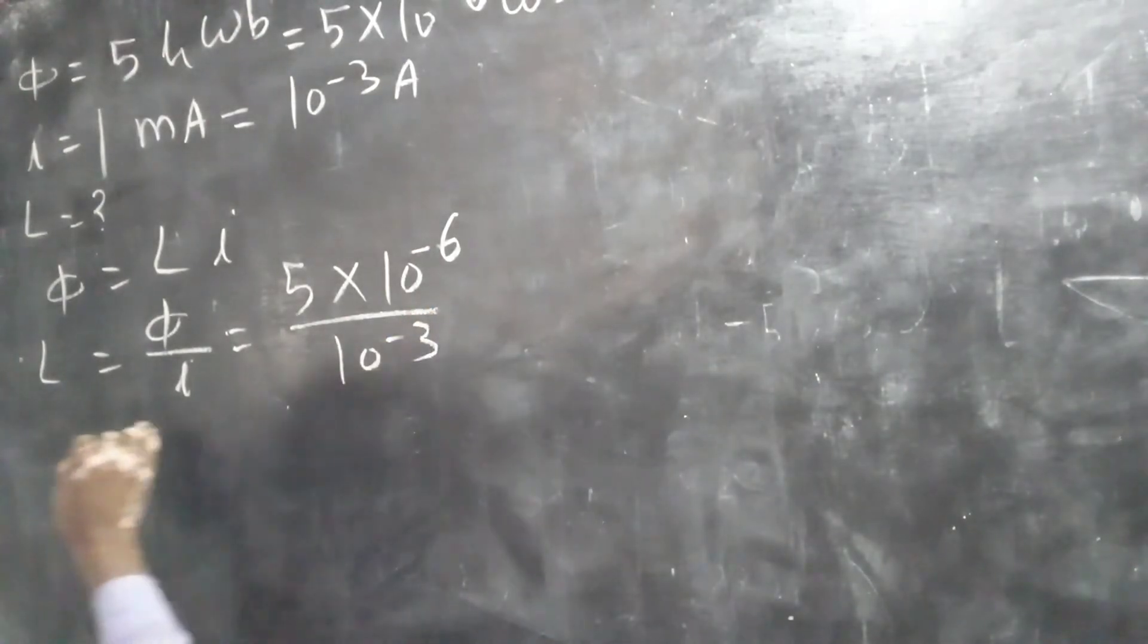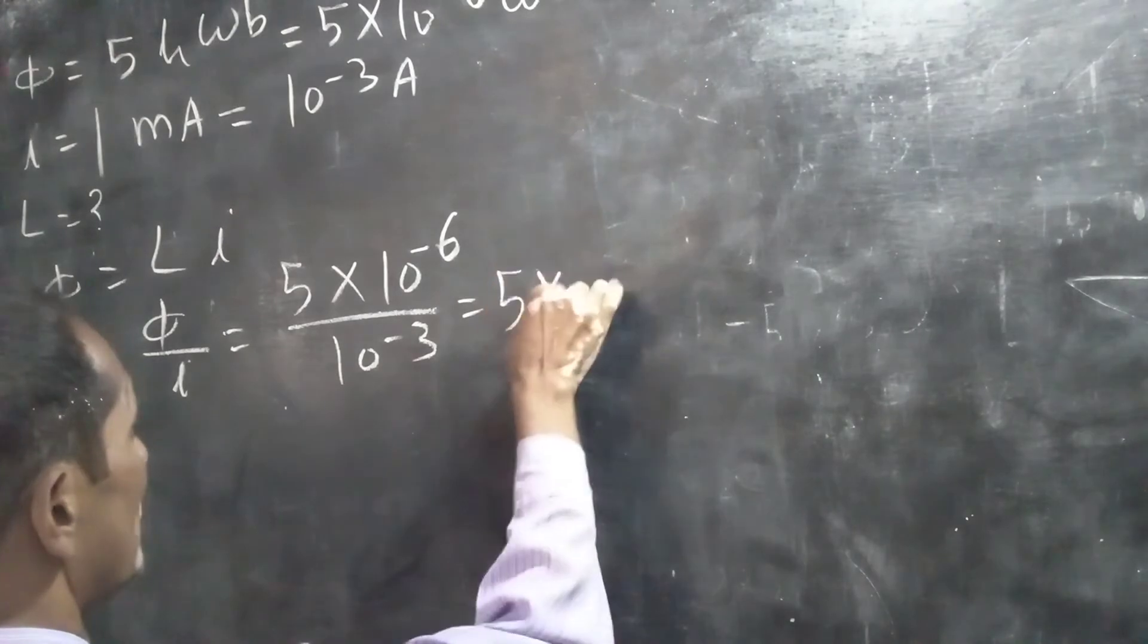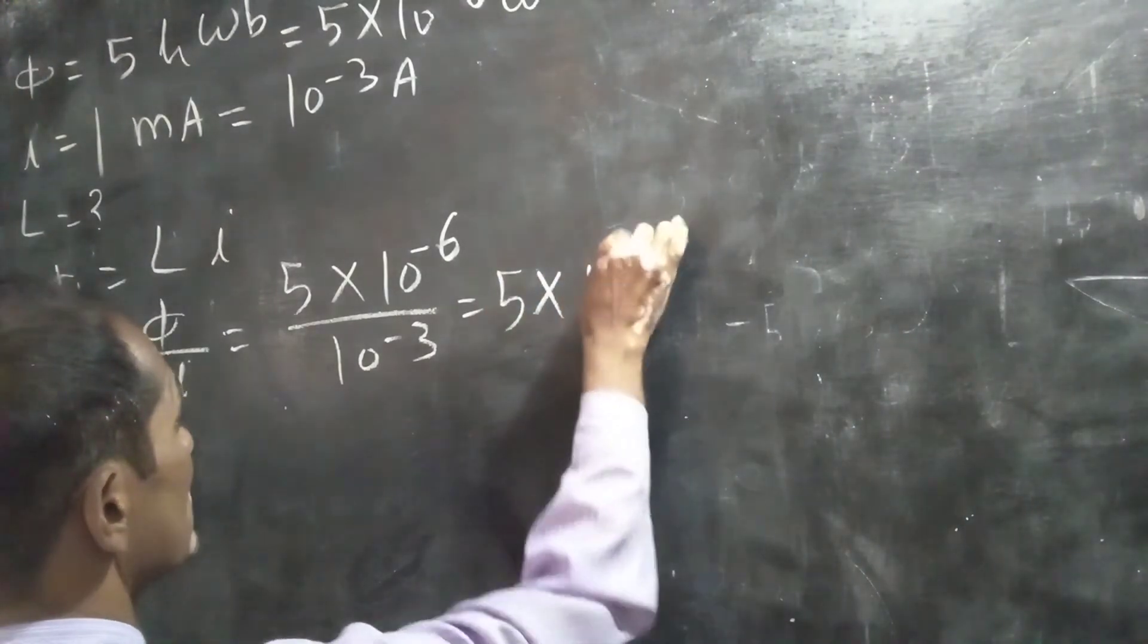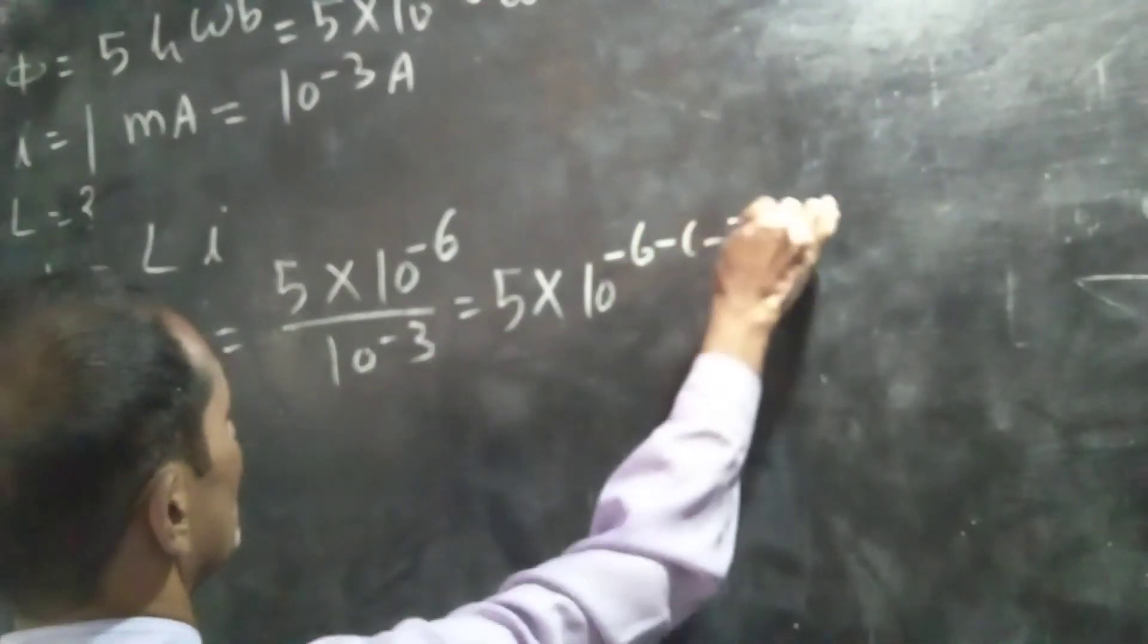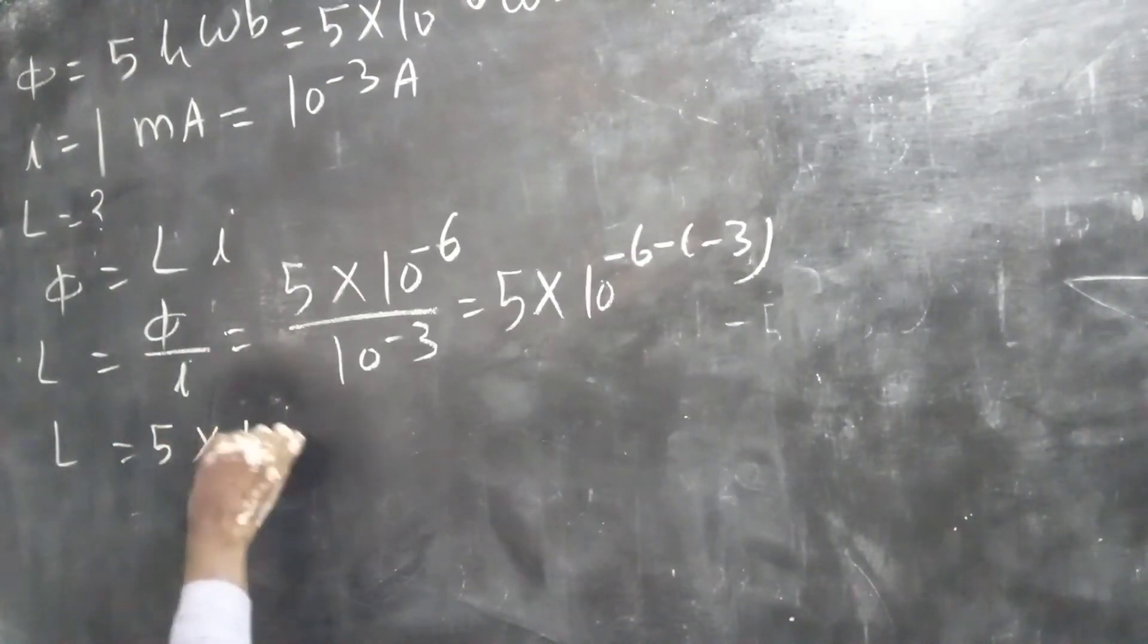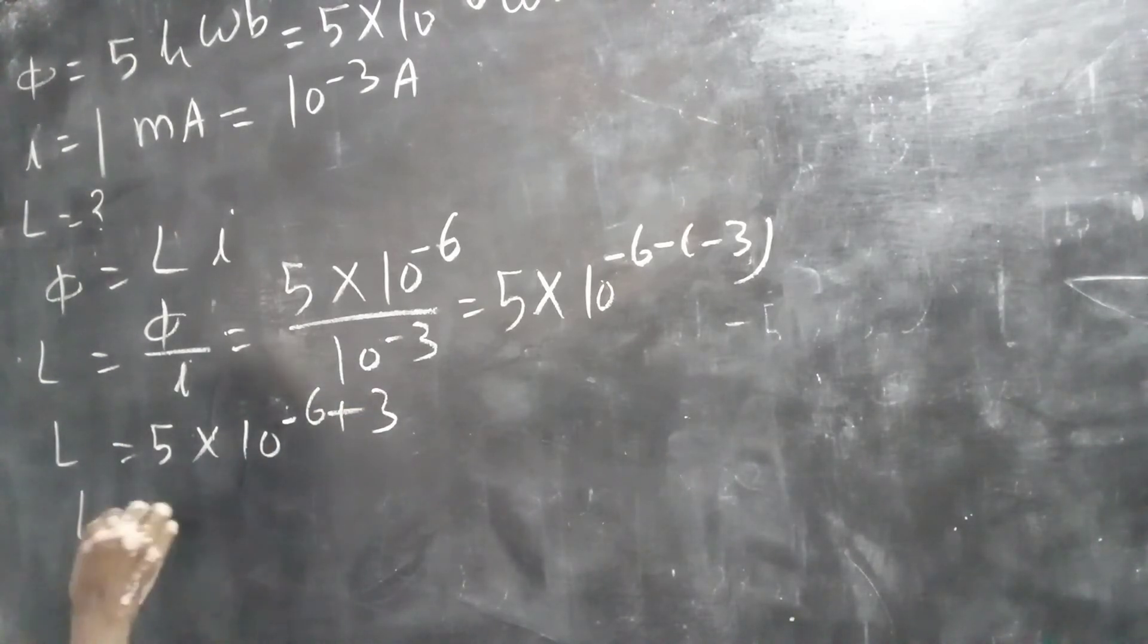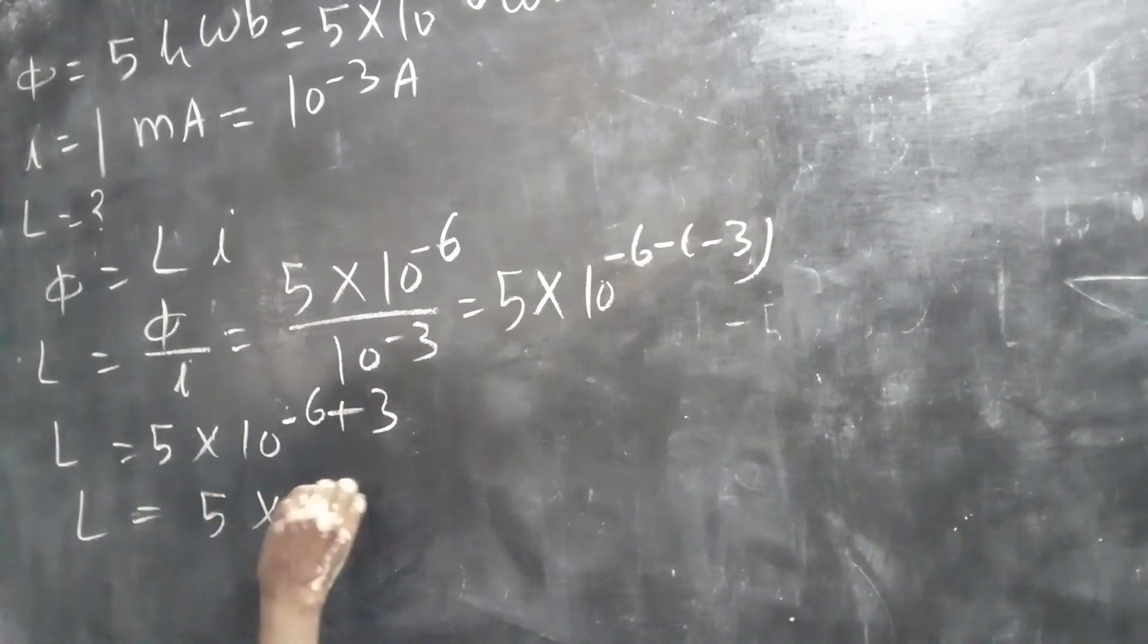When you divide, in division on same base power subtract. So 10 to the power minus 6 minus minus 3. L is equal to 5 into 10 to the power minus 6 plus 3. So L is equal to 5 into 10 to the power minus 3.